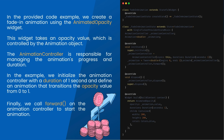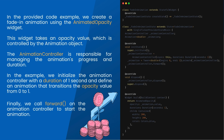In the example, we initialize the animation controller with a duration of 1 second and define an animation that transitions the opacity value from 0 to 1. Finally, we call forward on the animation controller to start the animation.